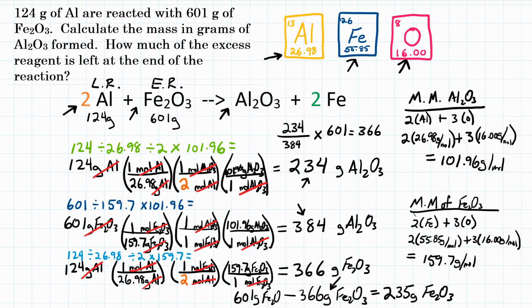Final answers: How much Al₂O₃ will be formed? 234 grams. How much of the excess reagent is left at the end of the reaction? 235 grams.